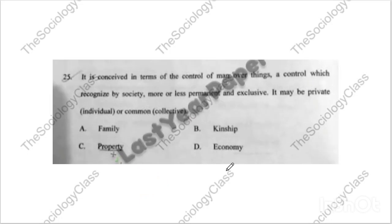Question number twenty-five: 'It is conceived in terms of the control of man over things, a control recognized by society as more or less permanent and exclusive. It may be private, individual, and common/collective.' Options: family, kinship, property, economy. This question has been repeated. The correct answer is property.